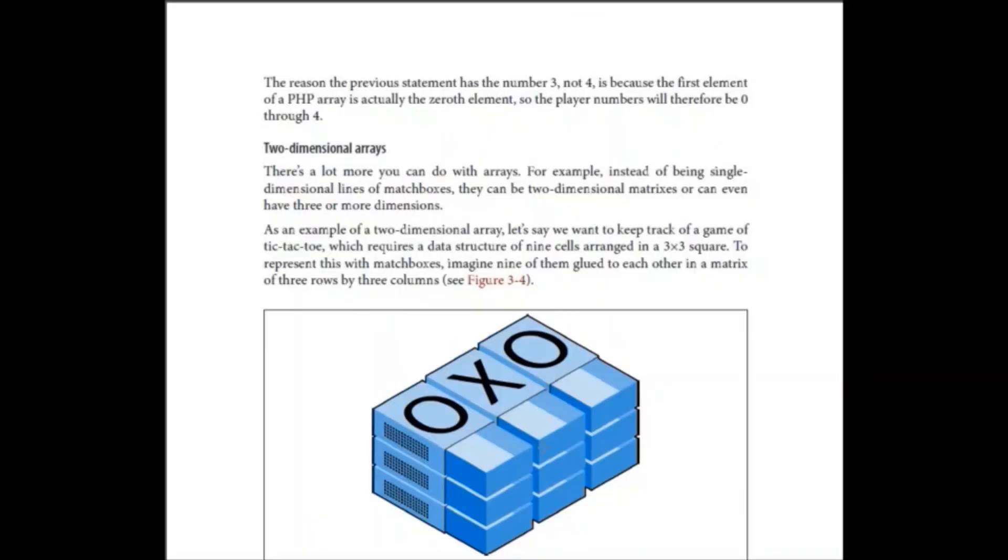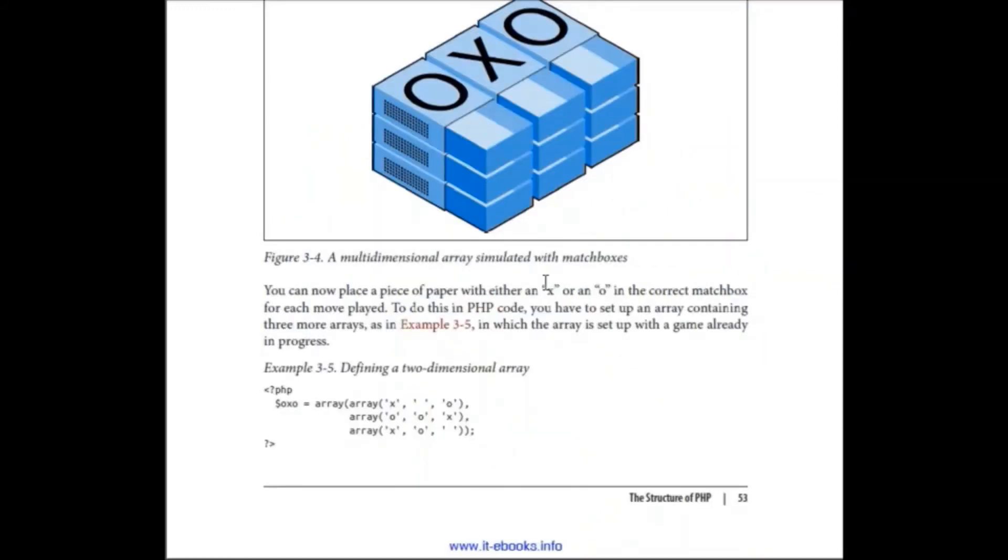Then we have multi-dimensional array. As I told you, that multi-dimensional array or a two-dimensional array consists of rows and columns. It is two dimensions. So that's how you can declare a multi-dimensional array. Array inside an array. We have created an array and we have given it multi-dimensions, one, two, and three dimensions.